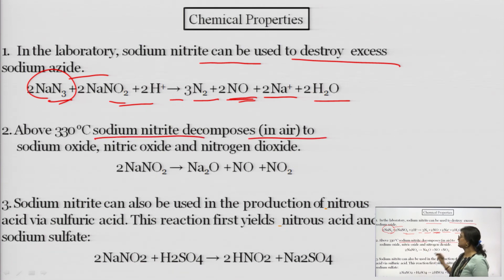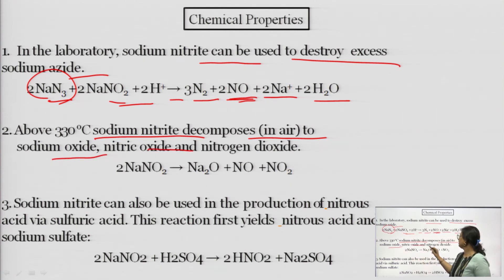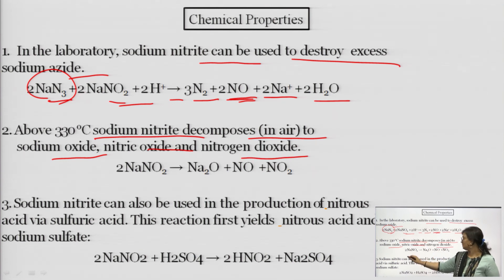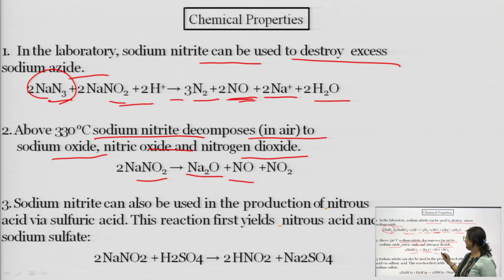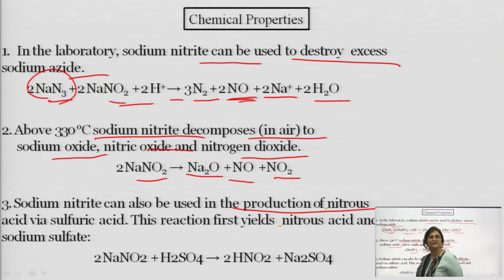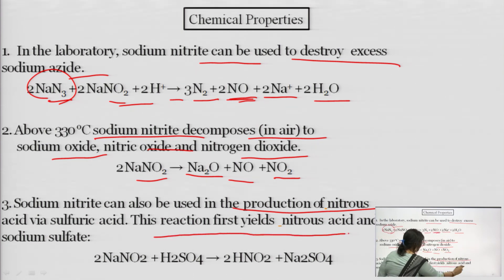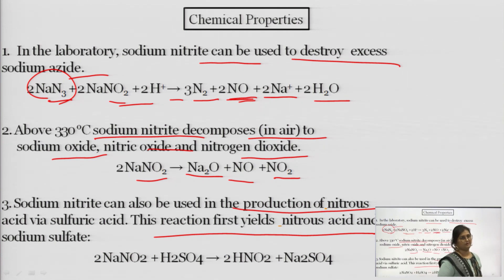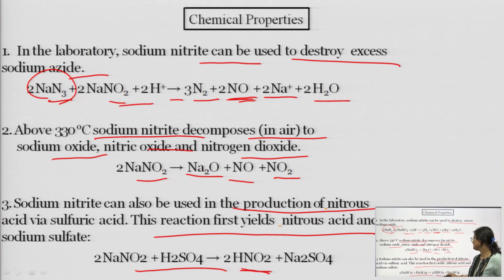Above 330°C, sodium nitrite decomposes in air to form sodium oxide (Na2O), nitric oxide, and nitrogen dioxide. Sodium nitrite can also be used in the production of nitrous acid via sulfuric acid: 2NaNO2 in the presence of sulfuric acid forms nitrous acid. Solubility: freely soluble in water and soluble in alcohol. Melting point: 271°C. pH lies between 7 and 9.